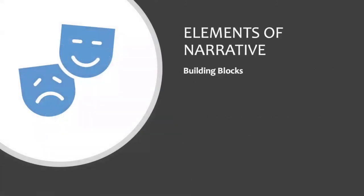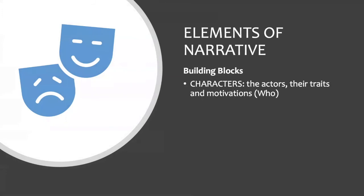So what are the elements of narrative? The first element is character — that's the who. Who are the people in the narrative? What are their traits, their goals, their agency, their motivations, their emotions, their beliefs? We want to know enough about a character so that the audience knows who they should be rooting for and why.